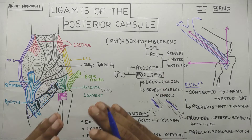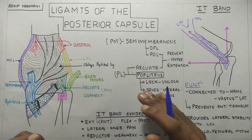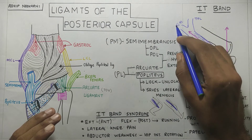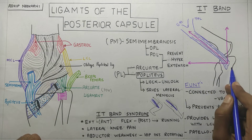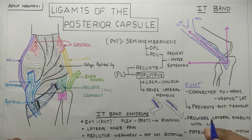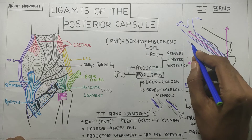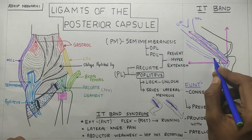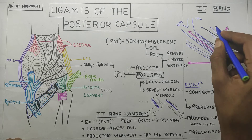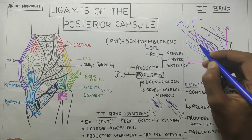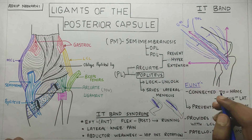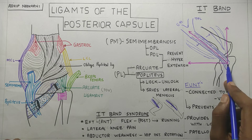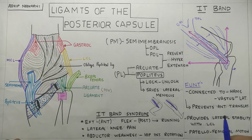Now that we know about the ligaments present posteriorly to the capsule, let us go to the IT band. The IT band has gluteus maximus and TFL as its origin. It travels down and attaches to Gerdy's tubercle at the tibia on the lateral side through a sling formed by its connection with the hamstring posteriorly and vastus lateralis anteriorly. Through this sling it pulls the tibia posteriorly, helps the ACL stabilize the knee, and prevents excessive anterior translation of the tibia on the femur. It also provides lateral stability to the knee with the LCL.